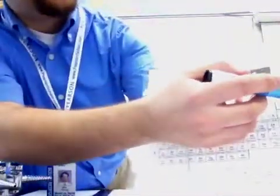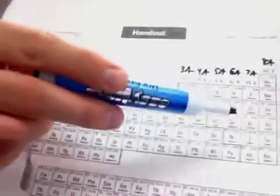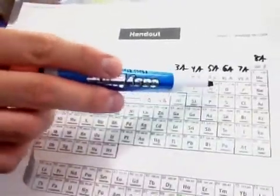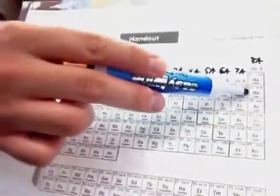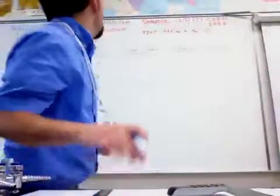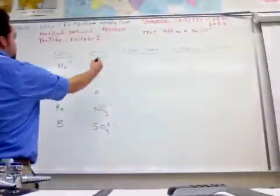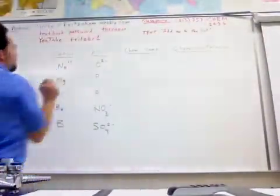Oxygen, right here on the periodic table — it's going to gain two electrons to be like neon. It's gaining two negative charges, so it's got a negative two charge.